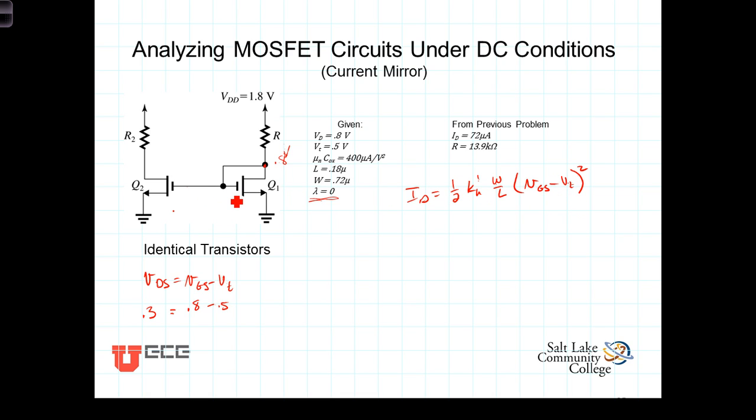Because these two transistors are identical, the physical parameters are the same. Because the gates are tied together and the sources are both grounded, VGS is the same. So the current flowing through here, I sub D, call it ID2, will be the same as the current flowing through here, which we've already calculated to be 72 microamps.